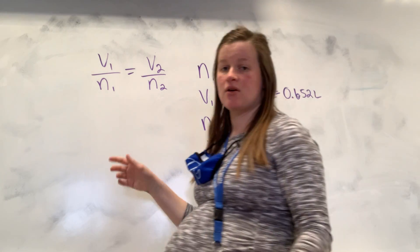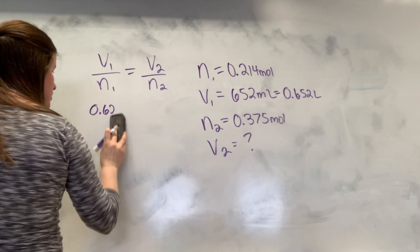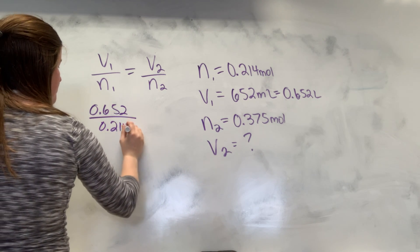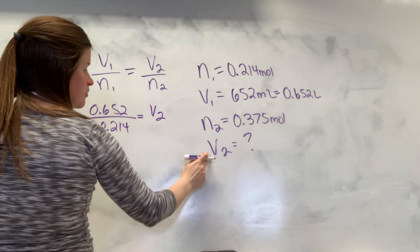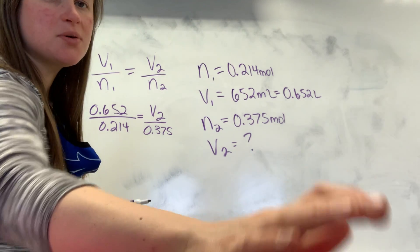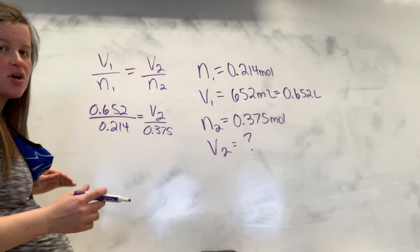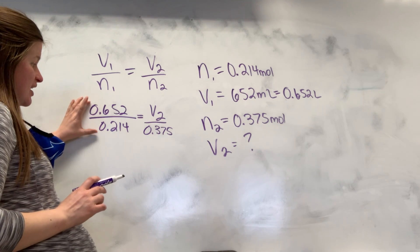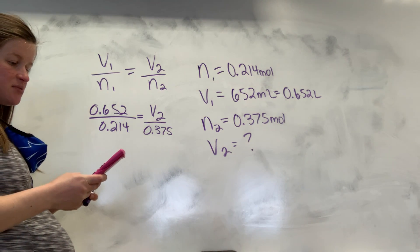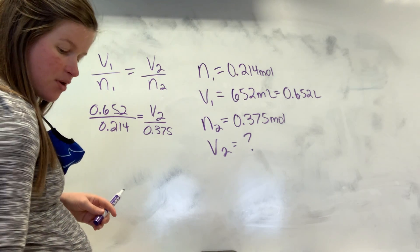And so then we're going to plug it in over here. And so then I'm going to take my 0.652 and divide it by my 0.214. And it's going to be equal to V2, which is what we're solving for, over 0.375. And so as we're doing this, we are going to plug in and solve. So it's just math. And I'm making sure I got all my numbers right. I did. So the first thing I'm going to do is divide. So I'm going to take this and divide this. And so when I do that, so I take it in my calculator, put 0.652, then I hit divide, and I do 0.214. And I'm getting 3.05, roughly.